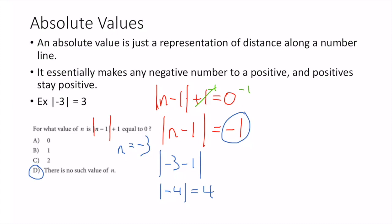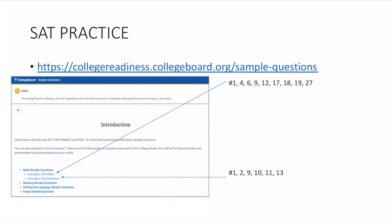I believe there are only one or two absolute value questions on the SAT. Just know it takes a negative number and turns it positive. Here's the practice website — it comes straight from the people who write the test, so this will be the best representation of questions you'll get. Once you put in your response, it gives a nice detailed explanation.